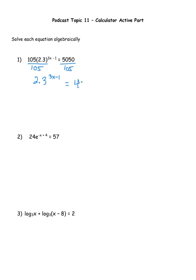I recommend that you do not do any rounding until you're all done, so when I use that 48.095 I'm going to use the entire number on my calculator. I want to solve for an exponent — and if you said logarithm, you'd be absolutely right, because that's what logarithms are for. I'm going to write this in log form: the base is always the thing that has an exponent, which is 2.3, so log base 2.3 of 48.095 equals the exponent 3x − 1.